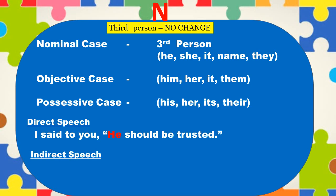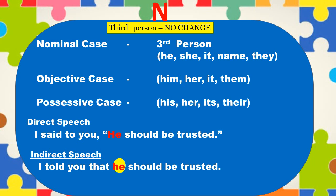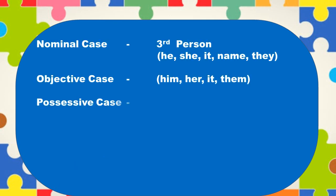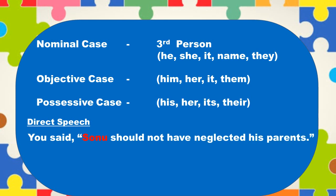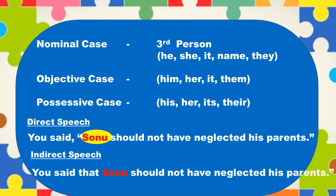For example: I said to you, 'he should be trusted.' In indirect speech it will become: I told you that he should be trusted. One more example: you said, 'Sonu should not have neglected his parents.' In indirect speech it will become: you said that Sonu should not have neglected his parents.